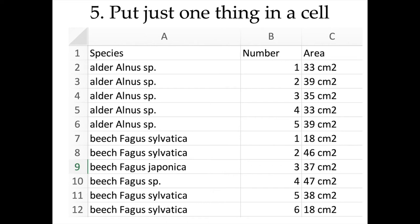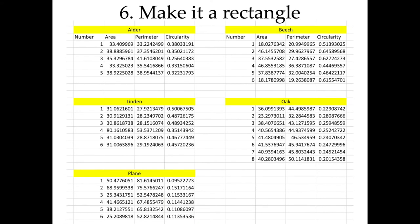If you want to include units, there are two main options: you can have an extra column for units, or you can add the units to the column label — for example, 'area_cm2'. For species, you could split into a column for common name and a column for Latin name. A table with merged header cells looks nice to the human eye, but it causes problems for a computer.